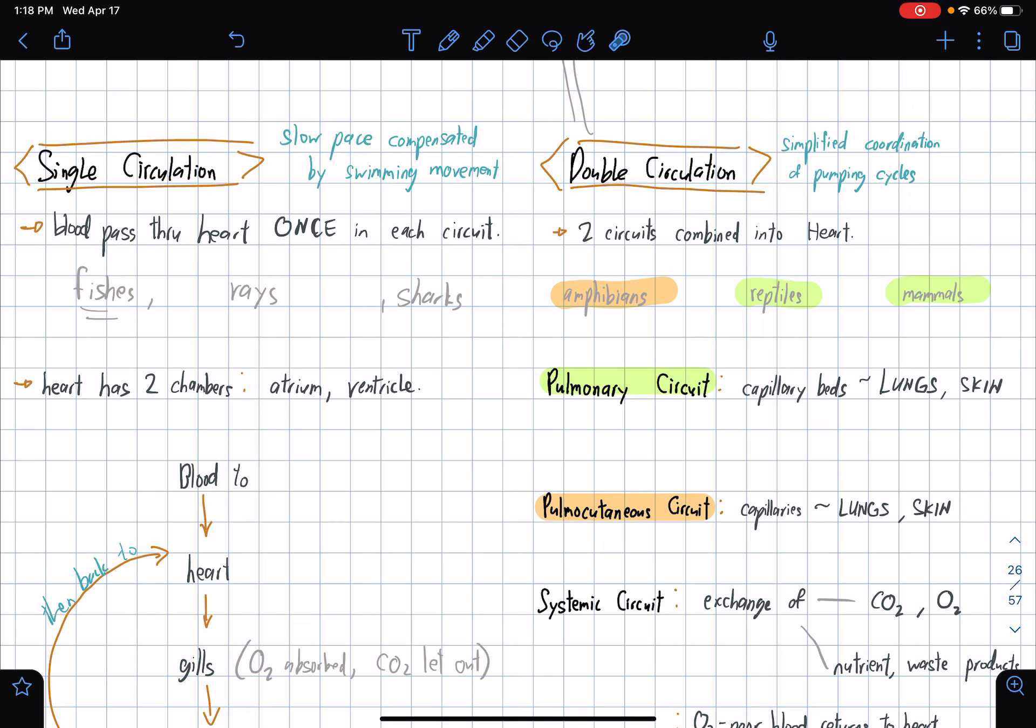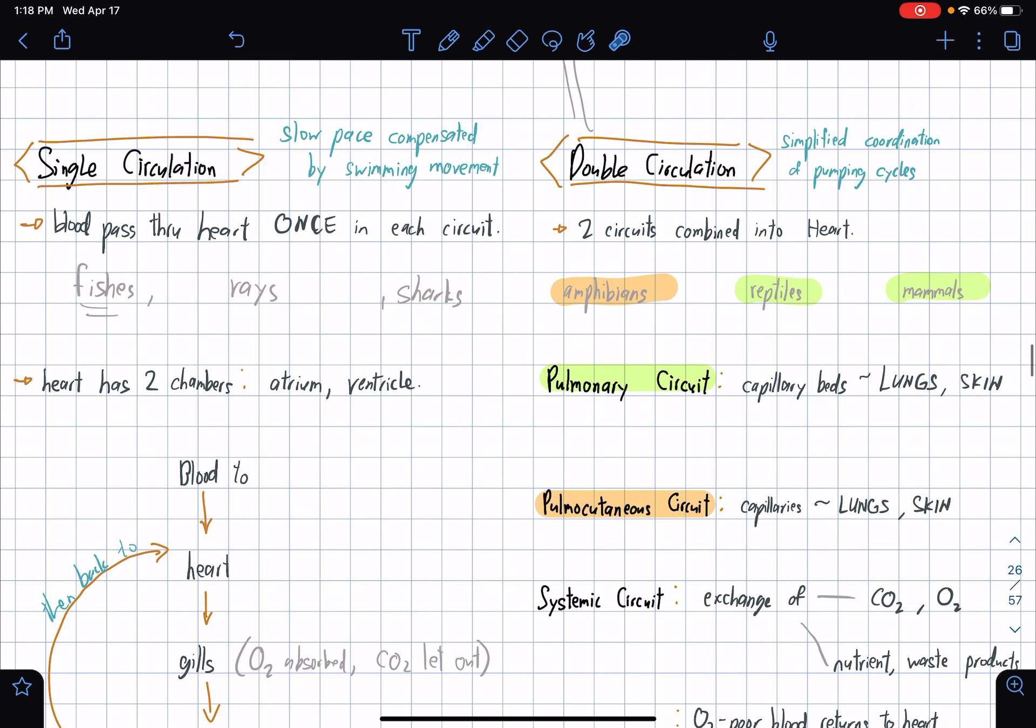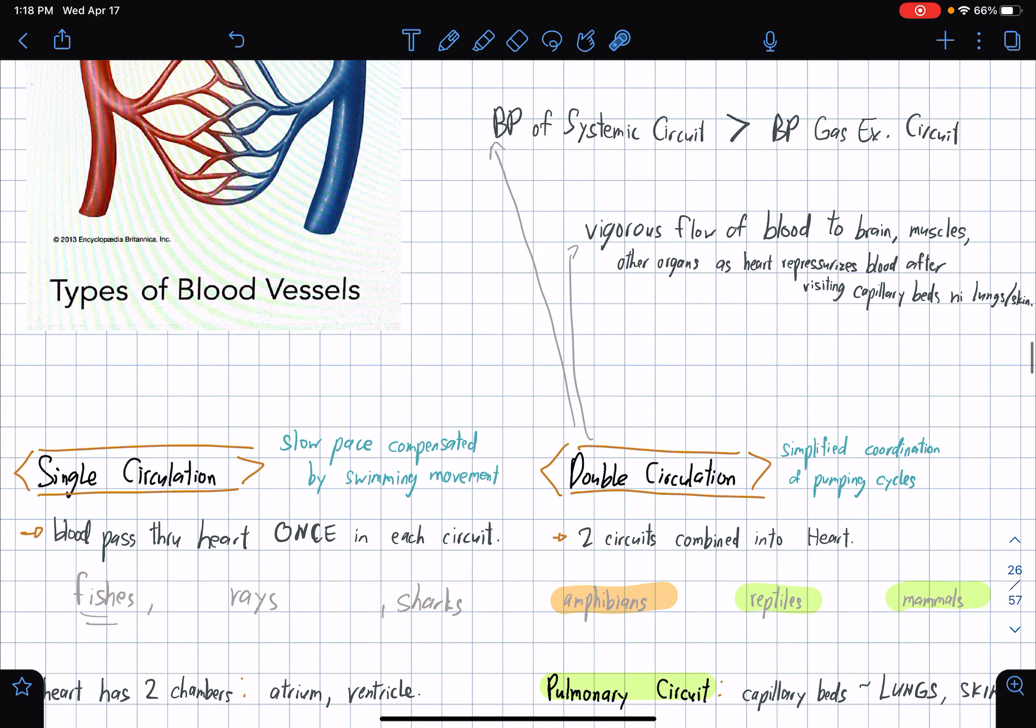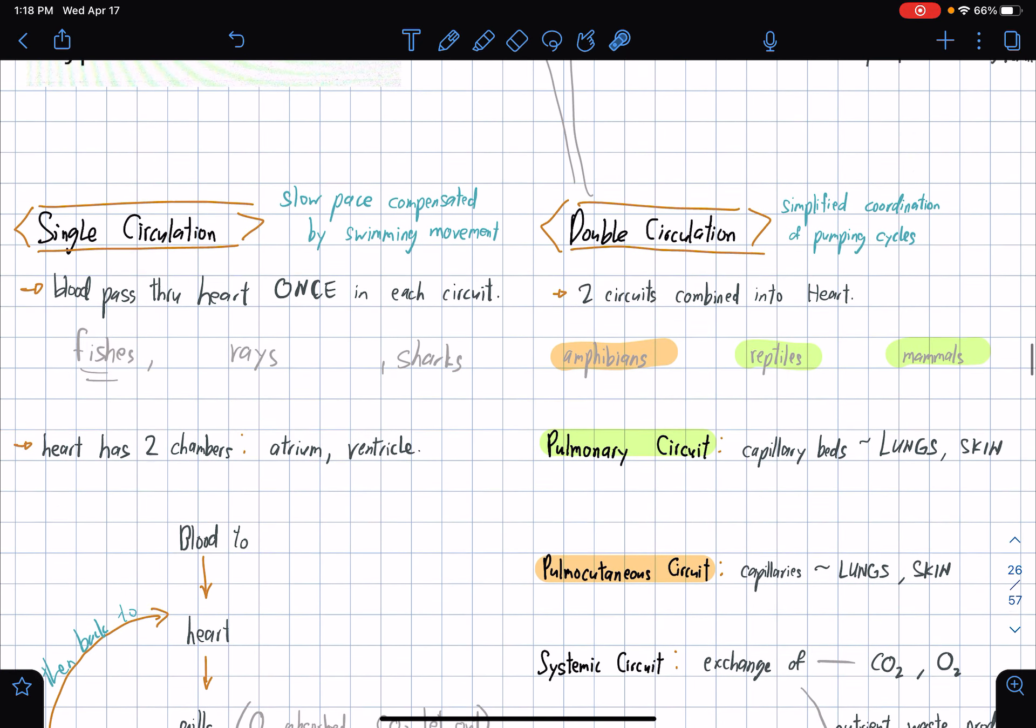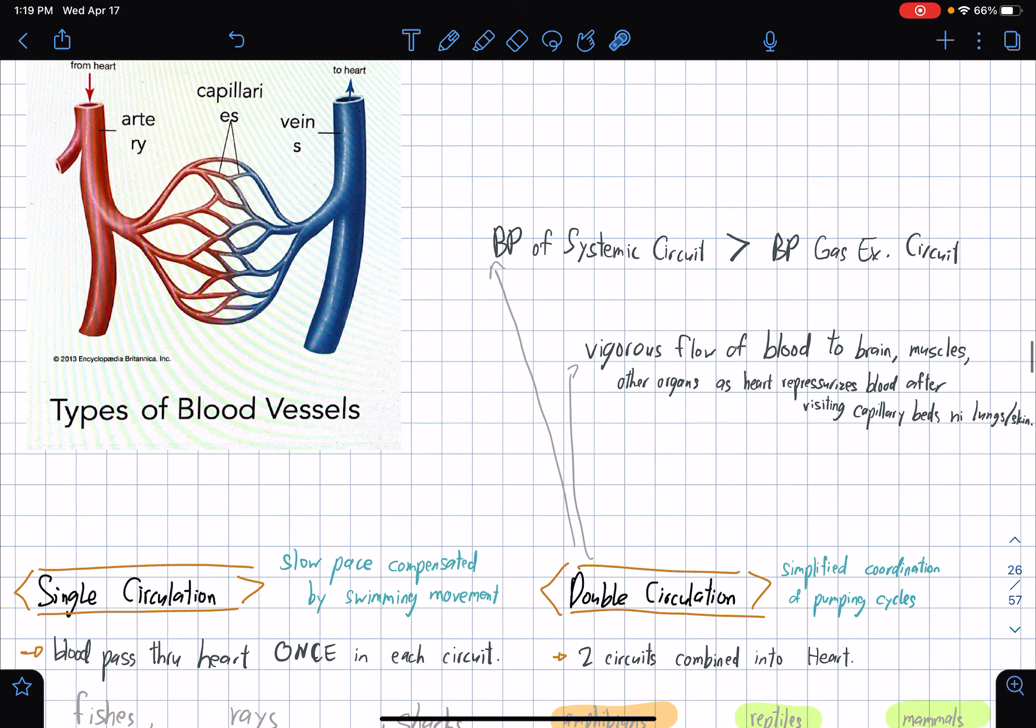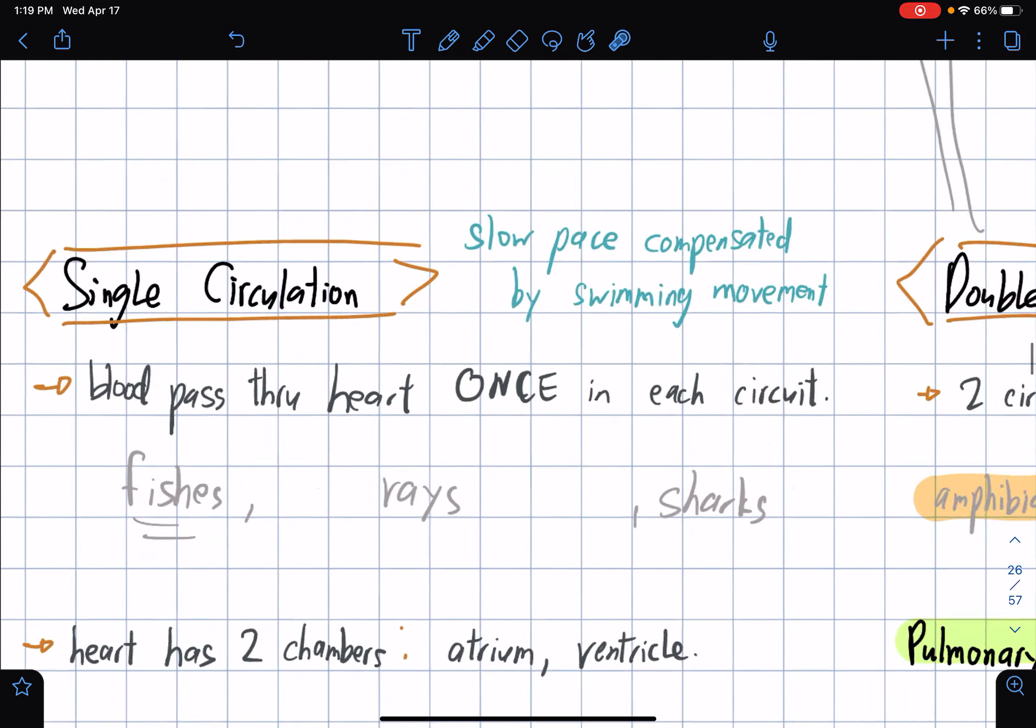Single circulation is the kind of circulation that fishes, rays, and sharks have - basically marine animals. For double circulation, humans have this kind of circulation among other species.